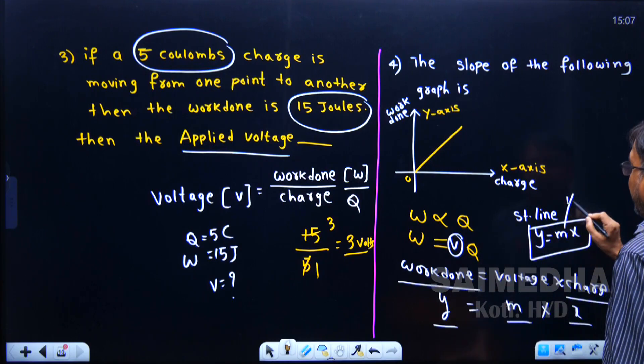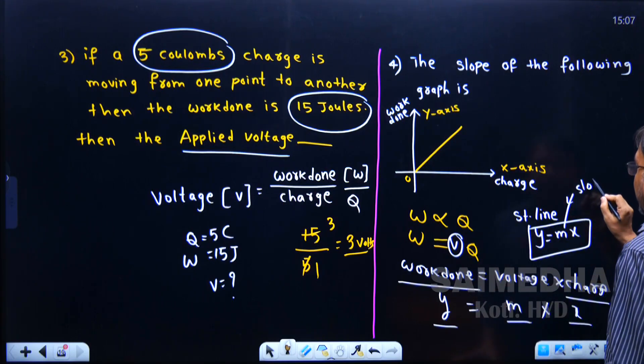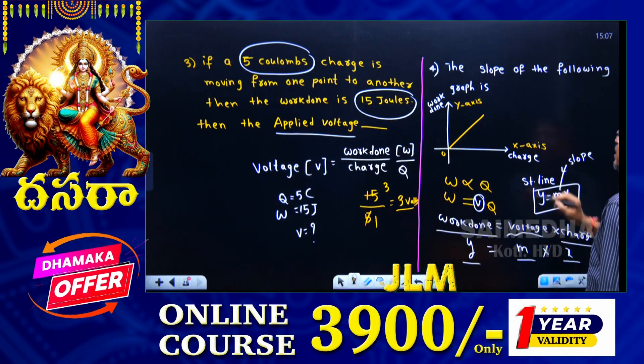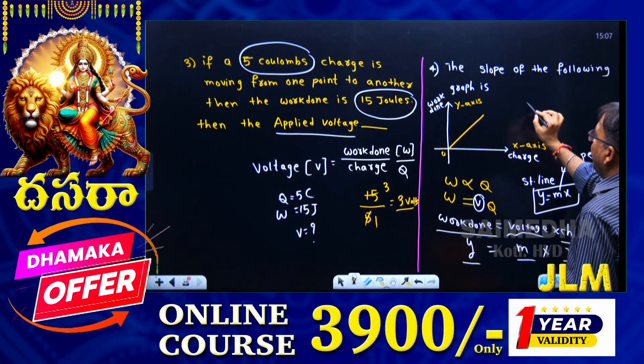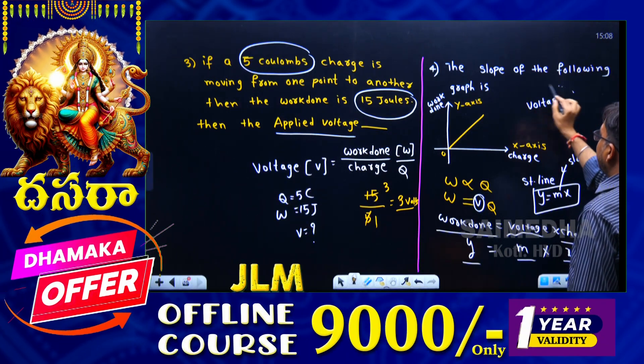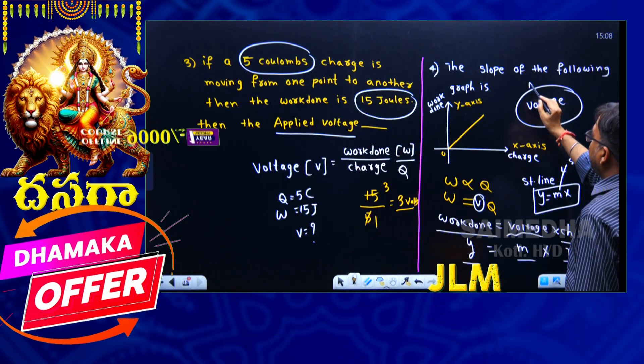What is the slope value here? Voltage. So the slope of this following graph is voltage. The answer is voltage.